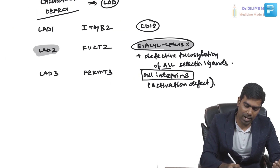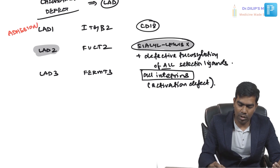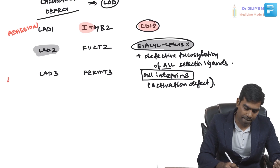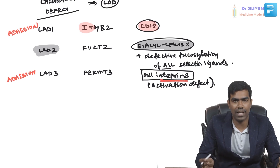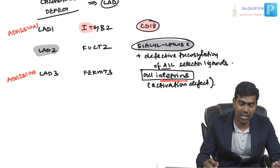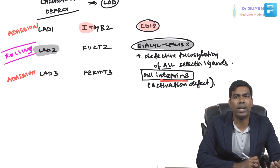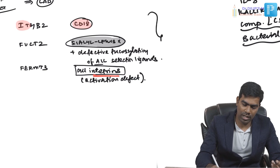LAD type 1 is a primary adhesion defect because it involves the integrin CD18, specifically the beta 2 integrin. LAD type 3 is also a primary adhesion defect because it involves all integrins. However, even though it's called Leukocyte Adhesion Defect type 2, LAD2 is actually a primary rolling defect, not an adhesion defect.